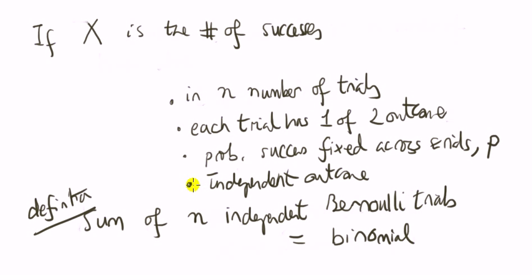Now these four bullet points can be succinctly put as the sum of n independent Bernoulli trials is a binomial. So to repeat, going from X is the number of successes all the way down to the four bullet points, if all that holds, a succinct way of saying it is that X is the sum of n independent Bernoulli trials.